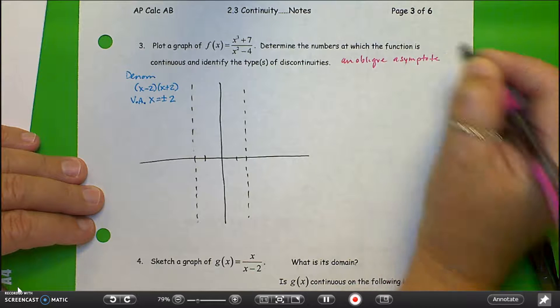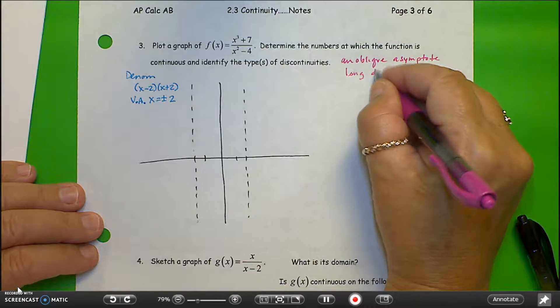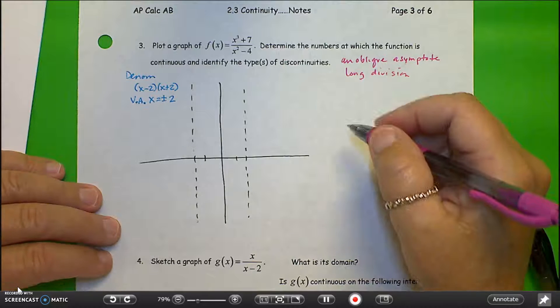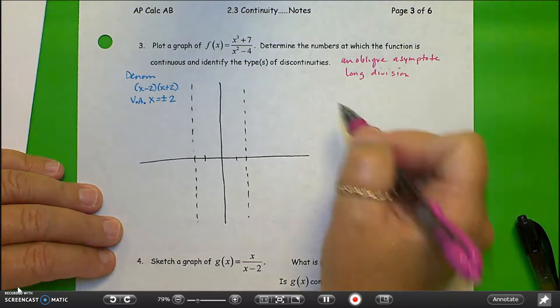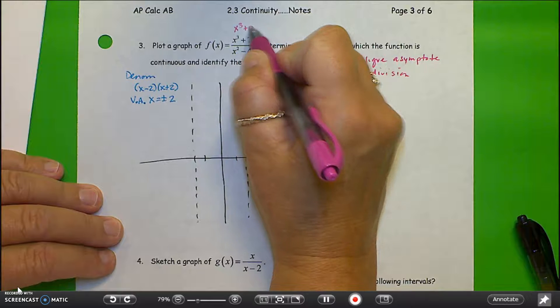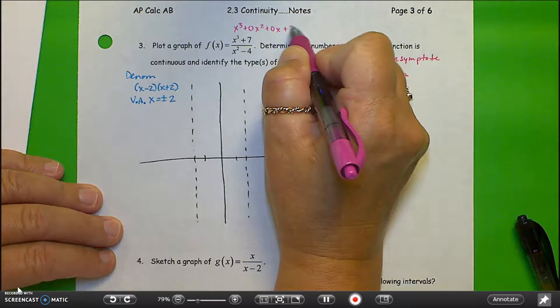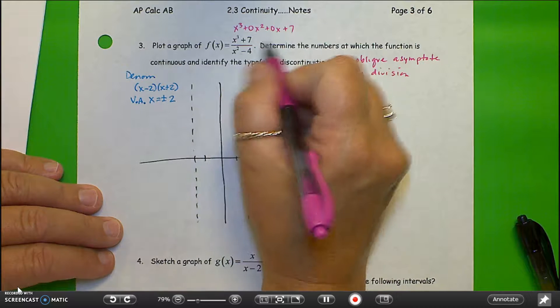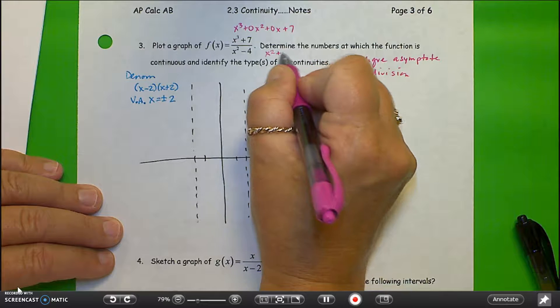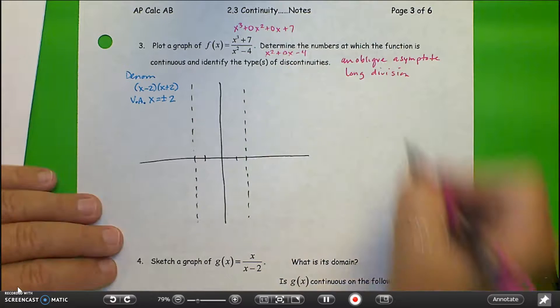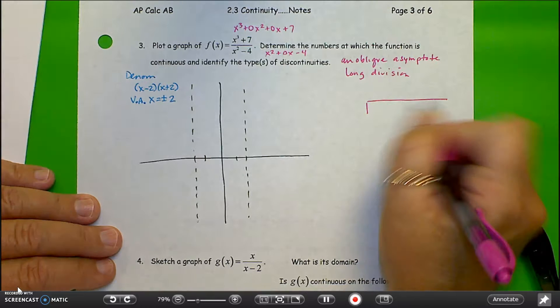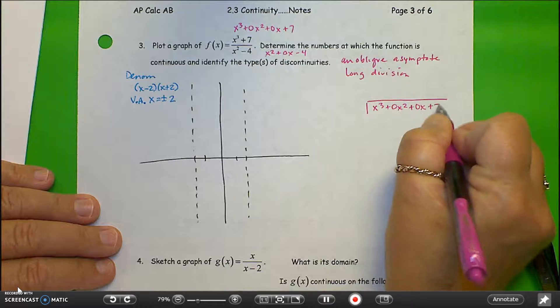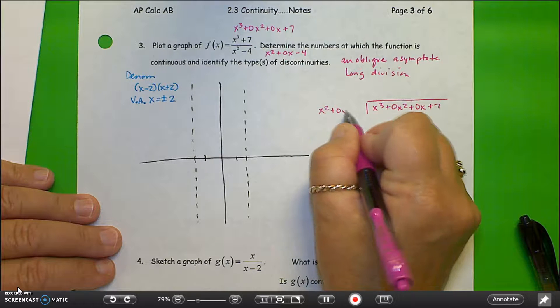I'm going to use long division to find what the oblique asymptote is. You can use synthetic division, I prefer long division. So if I set this up, this is x cubed plus 0x squared plus 0x plus 7. I want to make sure I've accounted for every part of the polynomial. In the denominator, I have x squared plus 0x minus 4. So that's what I'm going to do with my long division.